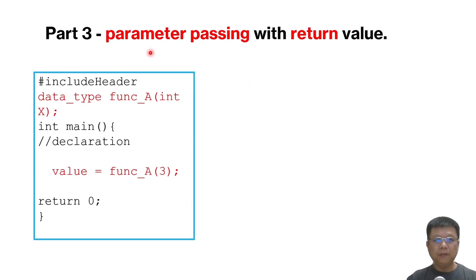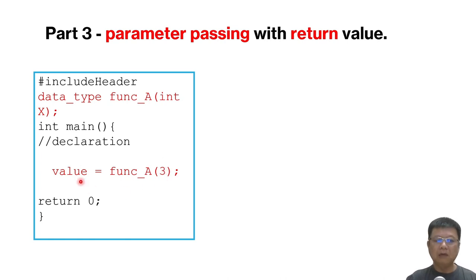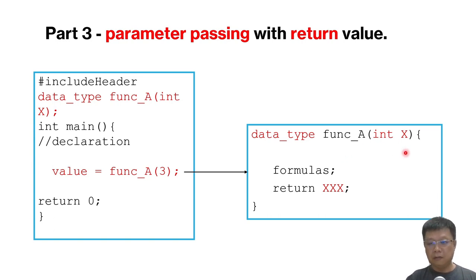Now we go to part three: parameter passing with a return value. In some cases, we need to pass a variable from main to a function, the function does all the processing, and the result is returned to the main program. When we declare the function, we must know the return data type. An important fact: a function can only return one value — we cannot return more than one value. However, you can pass as many parameters as needed and return one result.